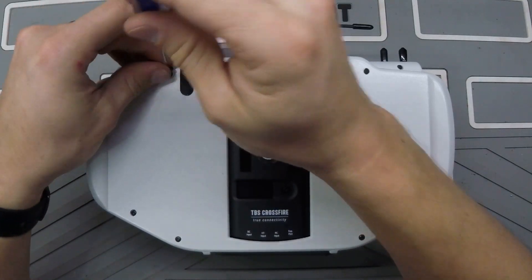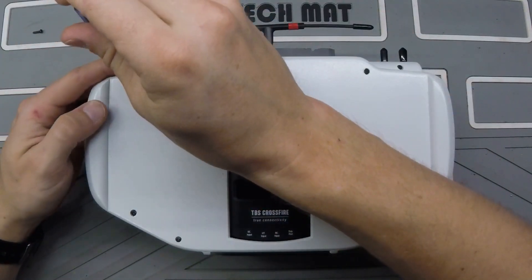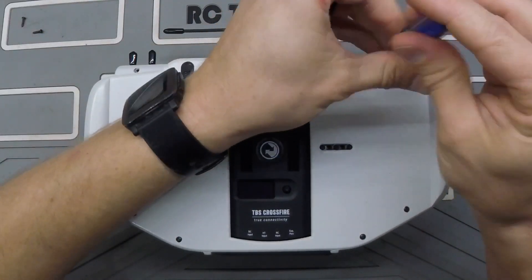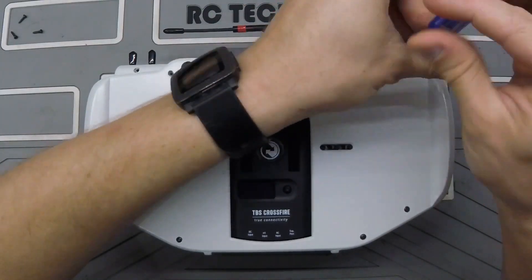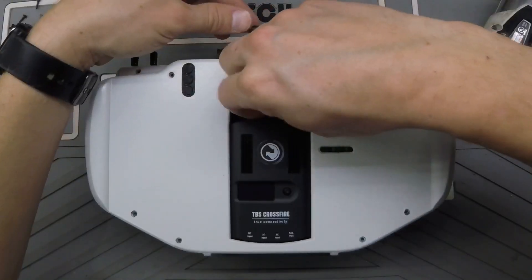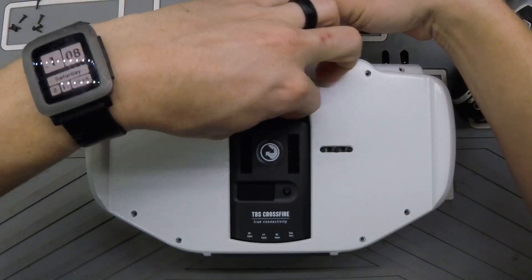We're going to start by taking apart the case and get a better view of what's inside the Tarango. To begin, let's remove the eight screws on the back that are holding the back cover on. Then we can unscrew the TBS crossfire antenna and slide it out the top, enabling us to remove the back cover.